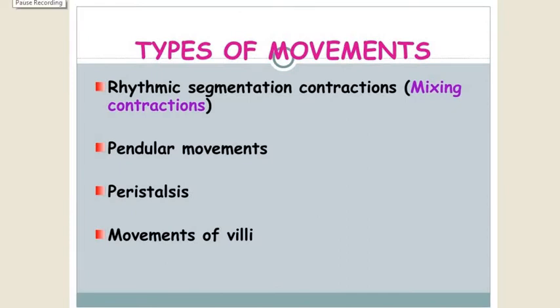Types of movements occurring in the small intestine are rhythmic segmentation contractions, which are mixing movements, then pendular movements, then peristalsis, and movements of villi.